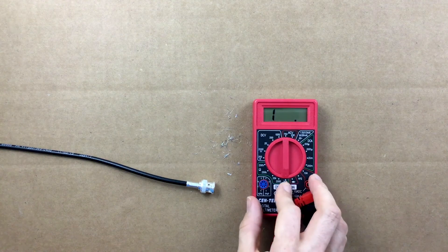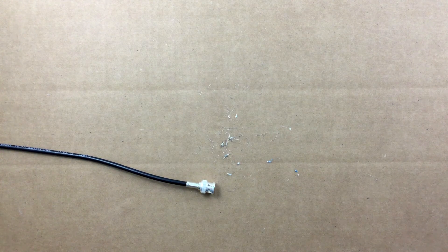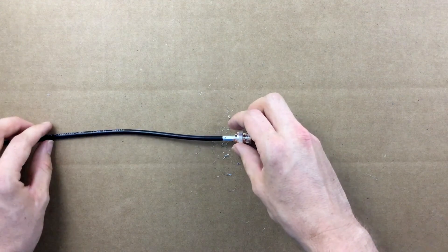Be sure to turn off your meter when done to conserve its battery. You have just completed the installation of a BNC male connector onto LMR195 coaxial cable.